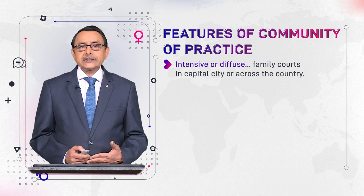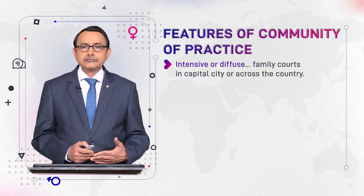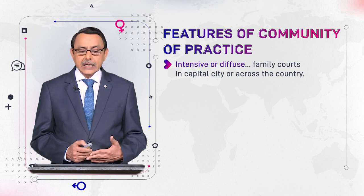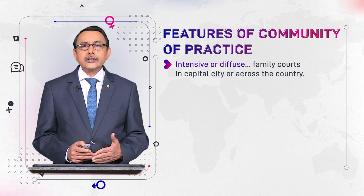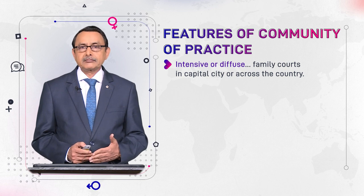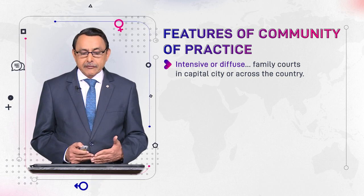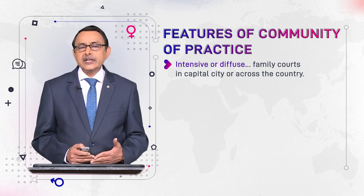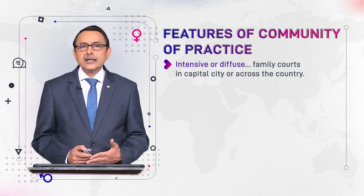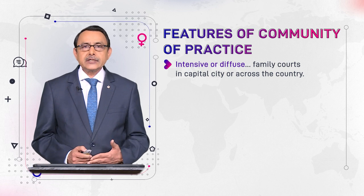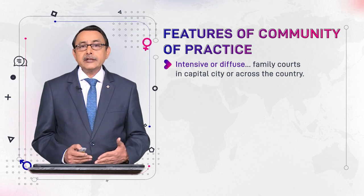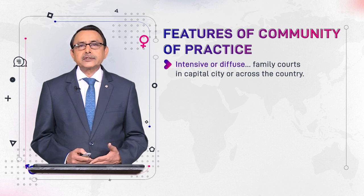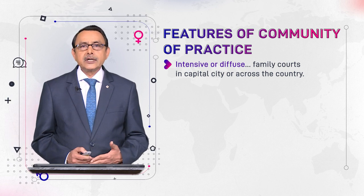A community of practice can be intensive or diffuse. By intensive we mean it is located in a specific place or specific context — for example, family courts located only in capital cities. If those courts are established across the whole country, the COP becomes diffuse.